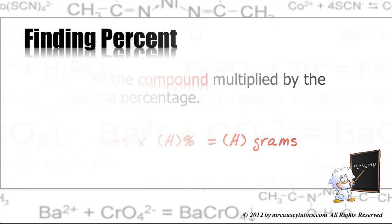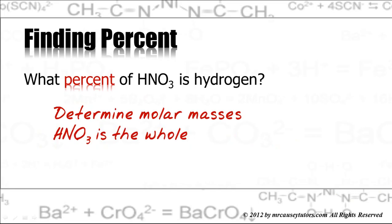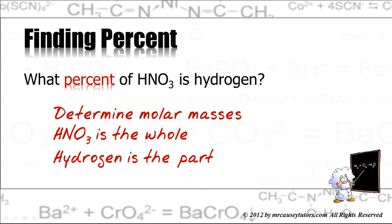Let's do a practice problem. What percent of HNO3 is hydrogen? Well, first we need to determine the molar masses. And then we need to realize that HNO3 is the whole. It's the main part. And the hydrogen is the part of the whole. And if you know about fractions, we can take the part, divide it by the whole, multiply it by 100, and that is our percent.